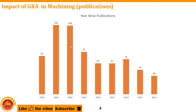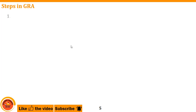Researchers are applying gray relation analysis to estimate the optimum levels or whatever is required for their particular application. The impact is very clear: gray relation analysis is showing a huge impact in publications. Now, what are the steps in GRA? The first step is data pre-processing.